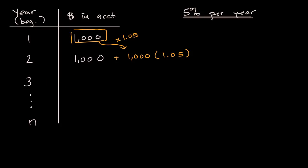Well, just like at the beginning of year two and the beginning of year one, we're going to make a $1,000 deposit. But now the money from year two has grown by 5%.